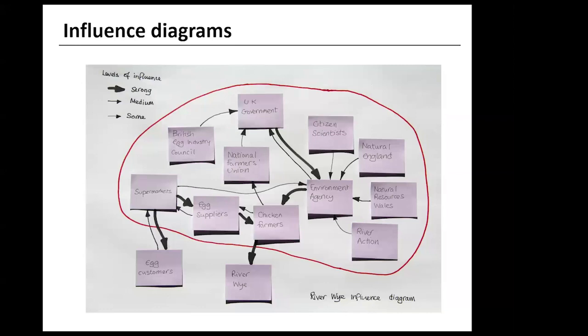Once we've explored various dynamics driving what's going on in a system of interest, I think it's useful to go back to the system map and mark some of these drivers in. We can do this with what we call an influence diagram, like the one shown here.